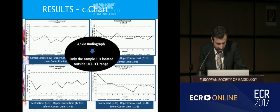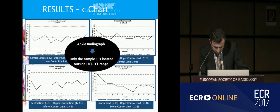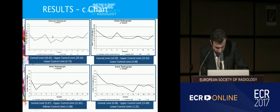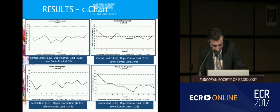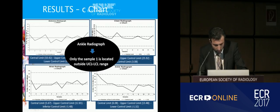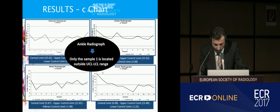For the C chart — in the case of the ankle — we have one sample that is out of the limit, as you can see here. So we have one sample located outside of the range.